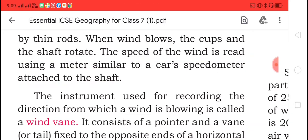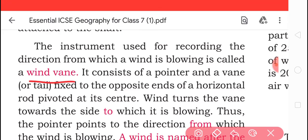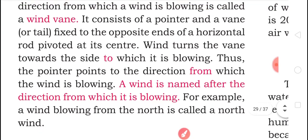The instrument used for recording the direction from which the wind is blowing is called a wind vane. It consists of a pointer and a vane fixed to opposite ends of a horizontal rod pivoted at its center. The wind vane turns towards the side to which the wind is blowing. Thus, the pointer points to the direction from which the wind is blowing.